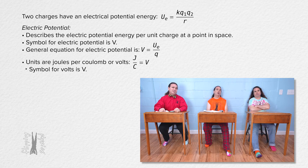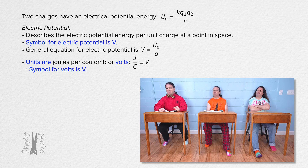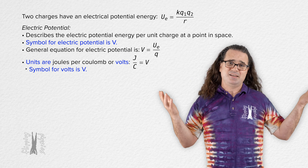Billy: So, the symbol for electric potential is uppercase V, and the units for electric potential are volts, for which we also use the symbol uppercase V. In other words, the symbol we use for electric potential and the symbol we use for the units of electric potential are the same?